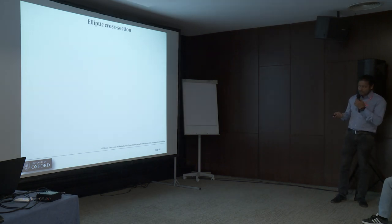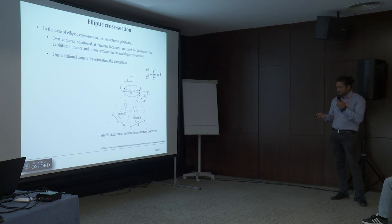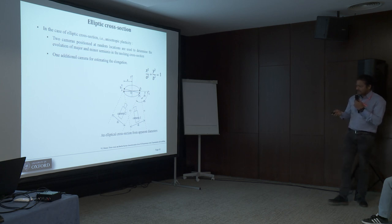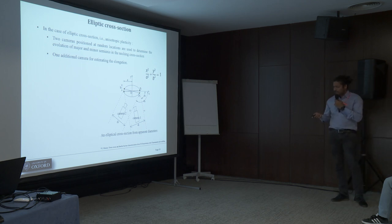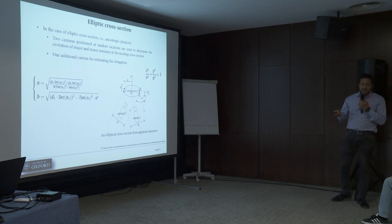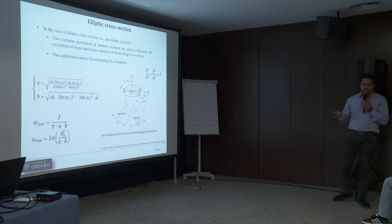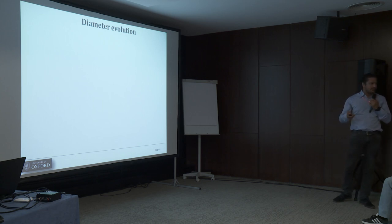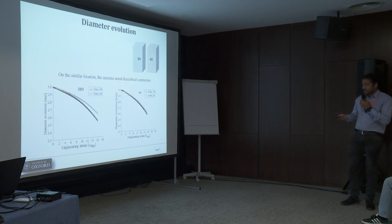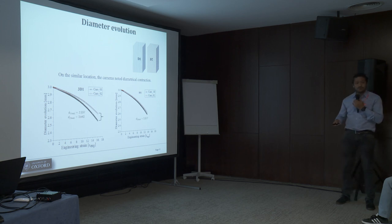We took inspiration from the work of senior researcher Jim Rohn, who proposed that if two cameras are positioned at random but known locations, we can do some math and estimate A and B — the major and minor axes of the ellipse — and from that estimate the true stress and true strain behavior of the material. One test result from quasi-static conditions shows that D1 clearly shows a difference in diameter contraction, whereas D2 shows no difference, and this was repeatable for multiple tests.